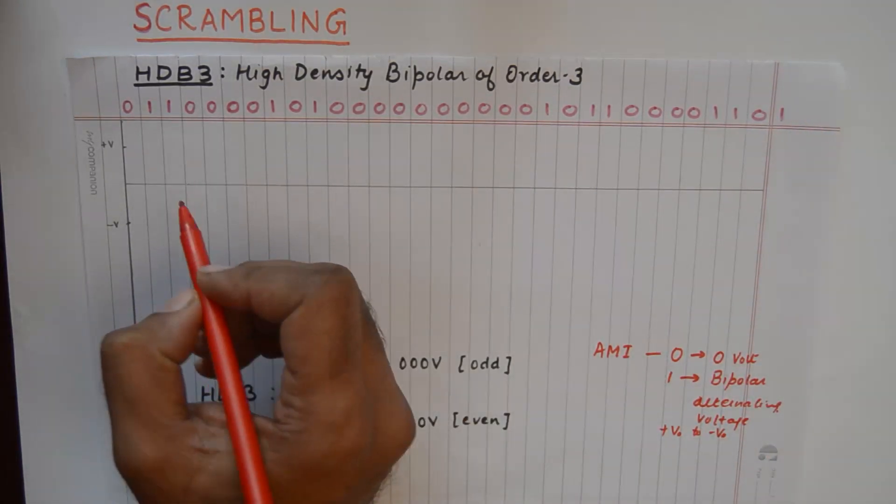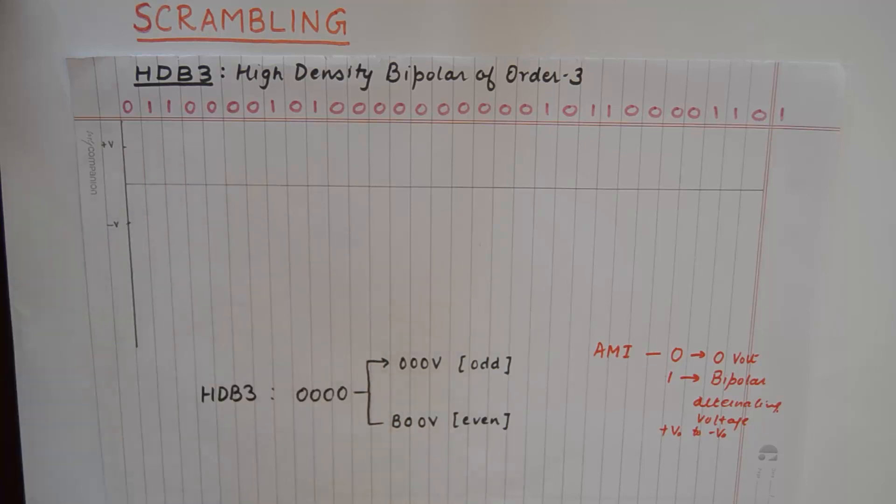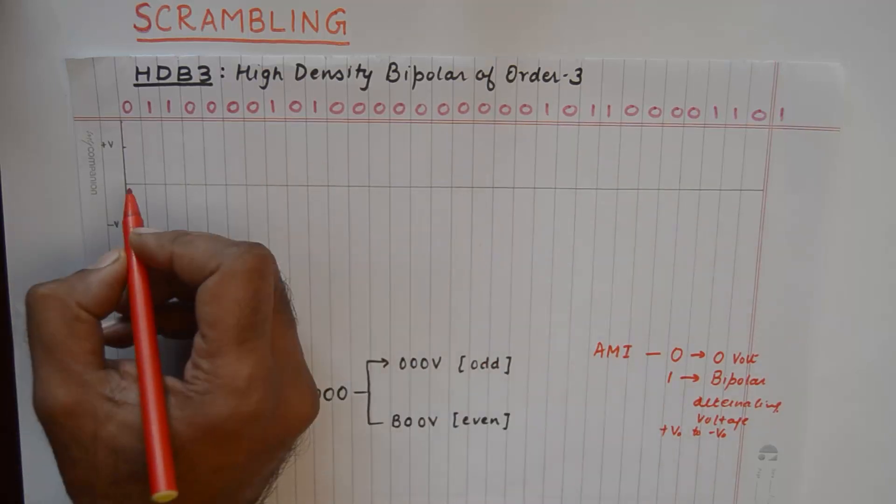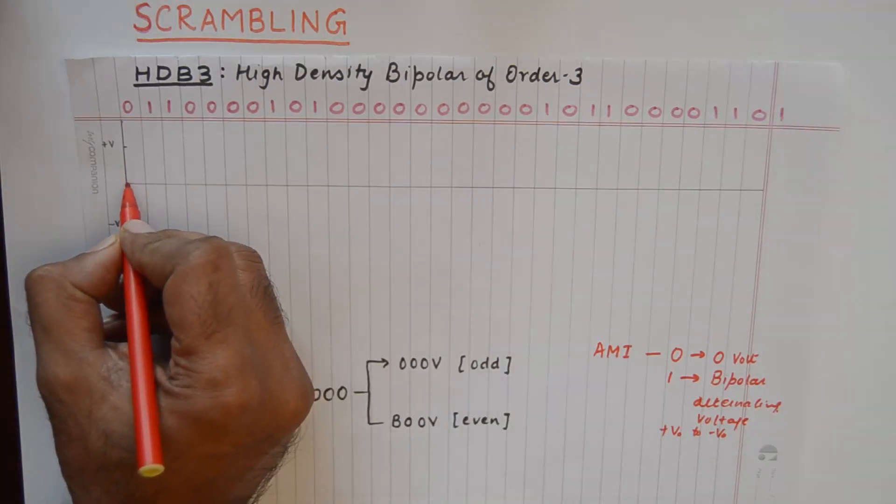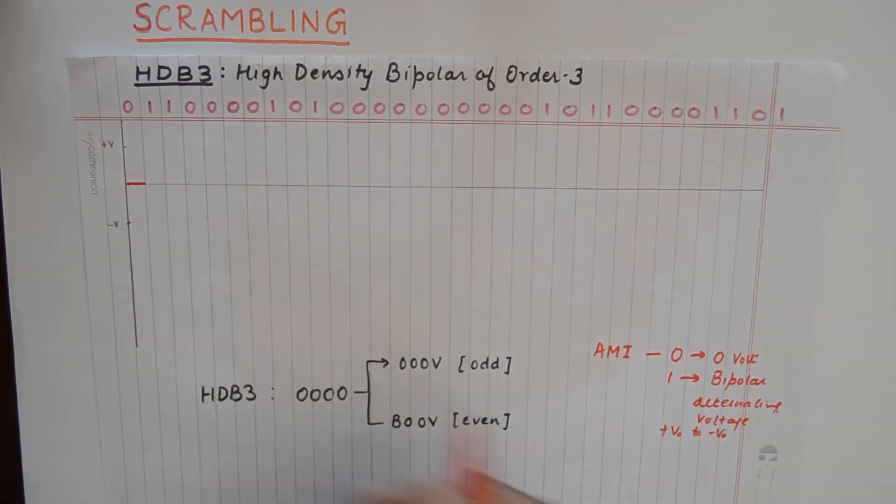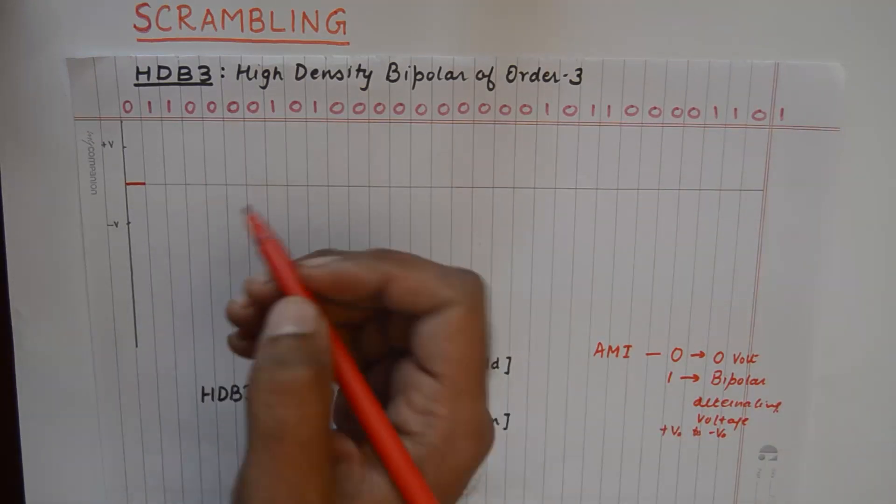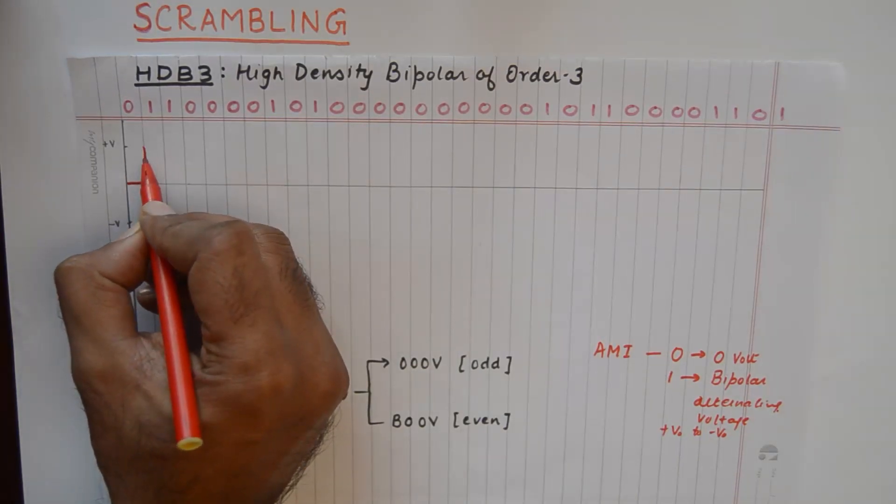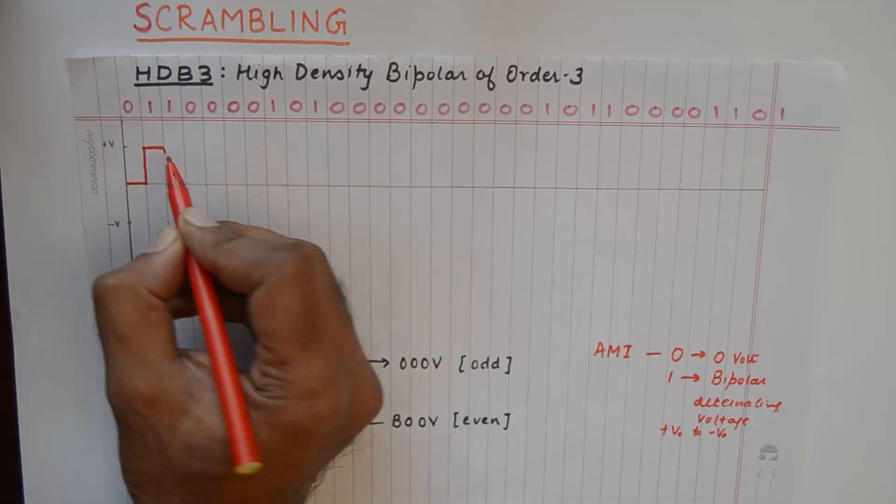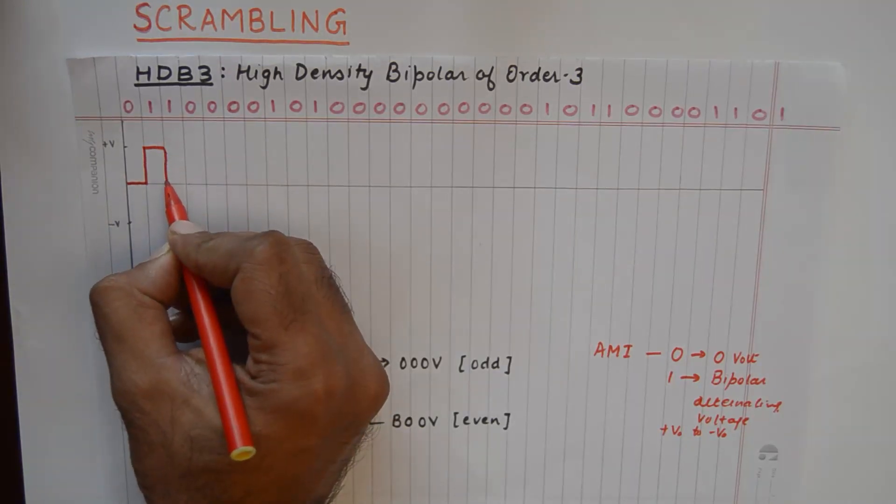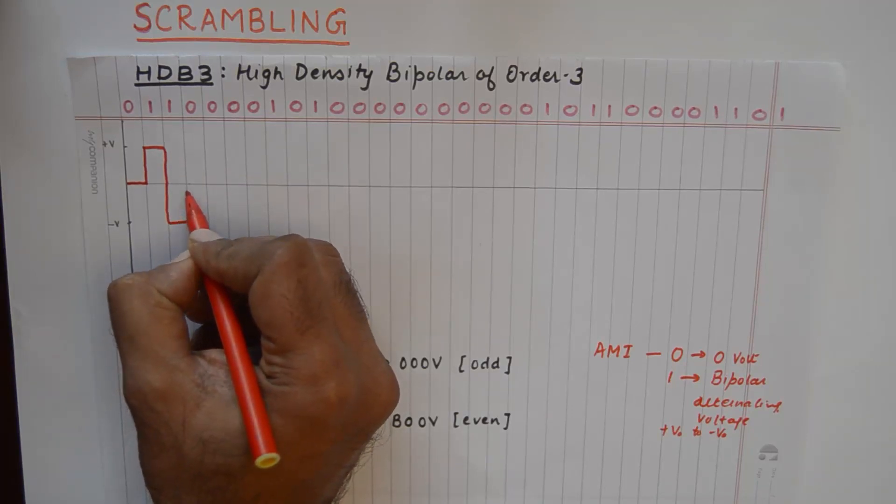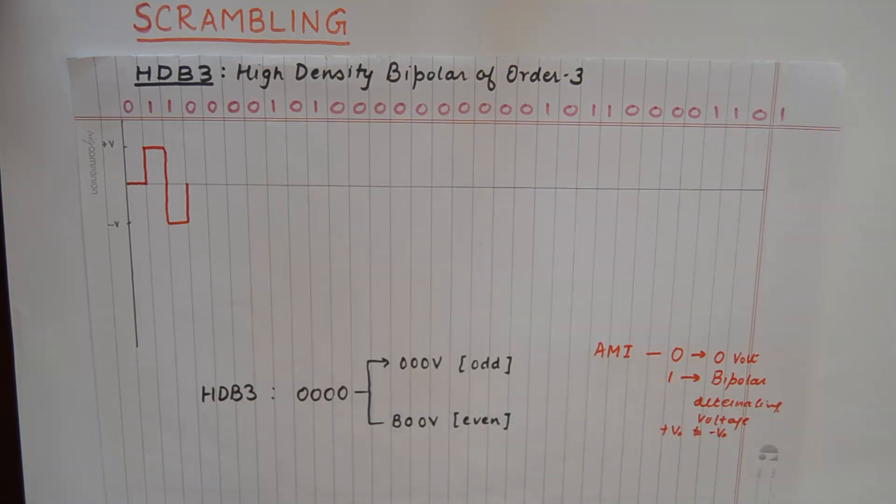So if we were to start drawing this line code with AMI, this 0 is represented using a 0 voltage and 1 is represented using plus V0 and minus V0. So we will start our first one with plus V and our next one will go to minus V. It will invert or alternate its mark, that is why the name is AMI.